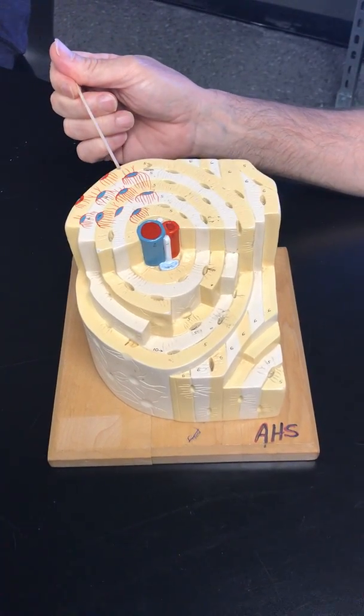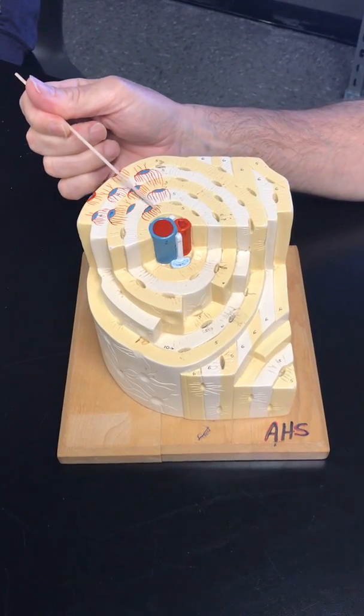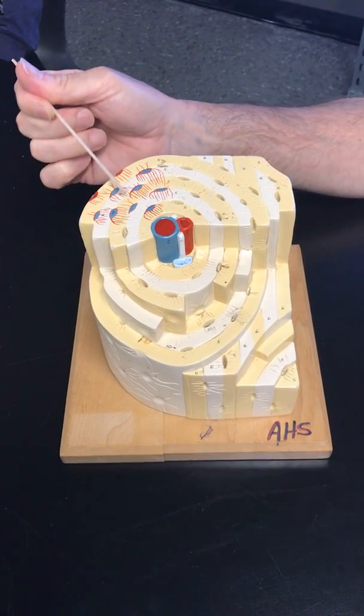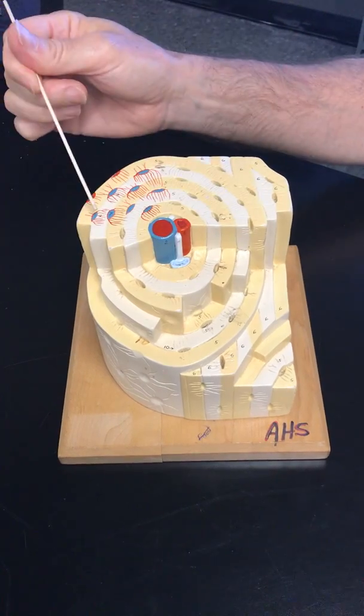Then we have the lamellae, concentric lamellae, one, two, three, four, five. That makes up the osteon.